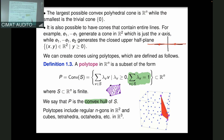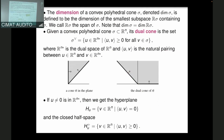Polytopes include regular convex n-gons, cubes, tetrahedra, octahedra — all convex examples. The dimension of a cone σ is the dimension of its linear span R·σ. The dual cone σ^∨ consists of all elements u in the dual R^n such that ⟨u, v⟩ ≥ 0 for all v in σ. We have two copies of R^n with a dot-product pairing; the dual cone is the set of u's that give non-negative dot product with everything in σ.